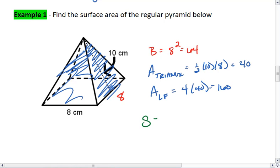Thus, my surface area is 64 plus 160, which equals 224 centimeters squared.